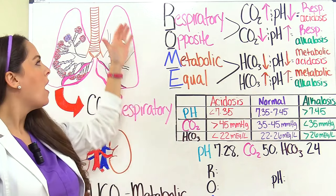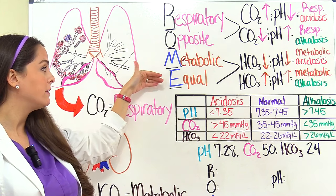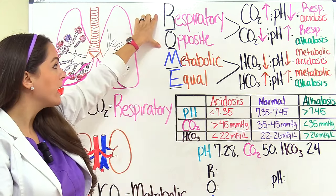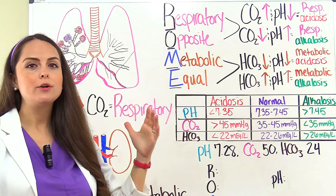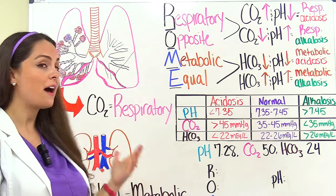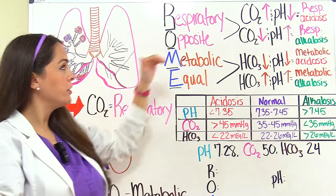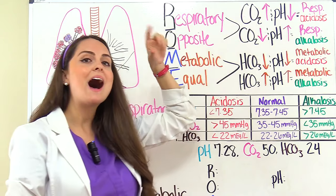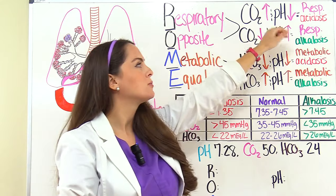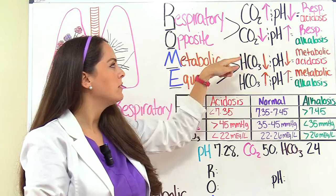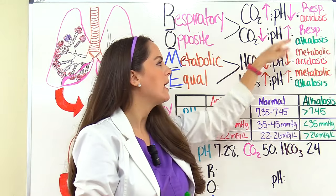Now let's look at the acronym ROME: R stands for Respiratory, O for Opposite, M for Metabolic, E for Equal. Keep RO together and ME together. Respiratory Opposite means CO2 represents respiratory — when CO2 is high and blood pH is low (they're opposite), it's respiratory acidosis. When CO2 is low and blood pH is high (also opposite), it's respiratory alkalosis.